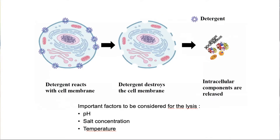Detergent cell lysis is a milder and easier alternative to physical disruption of cell membranes. Detergents break the lipid barrier surrounding cells by solubilizing proteins and disrupting lipid-lipid, protein-protein, and protein-lipid interactions. Detergents, like lipids, self-associate and bind to hydrophobic surfaces.